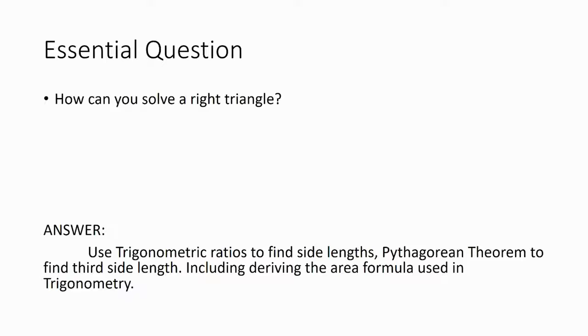So we use trigonometric ratios already to find side lengths. We use Pythagorean Theorem to find the third missing side length. And we also need to derive the area formula used in trig, because not every time will the area of a plot of land be based off of a square. Sometimes it will be based off of a triangle with a different degree other than 90 degrees.